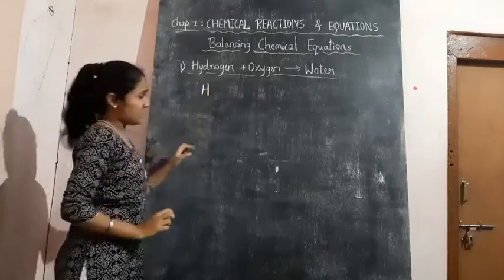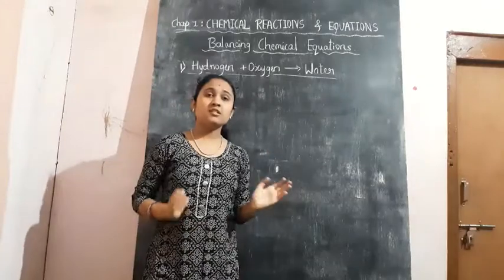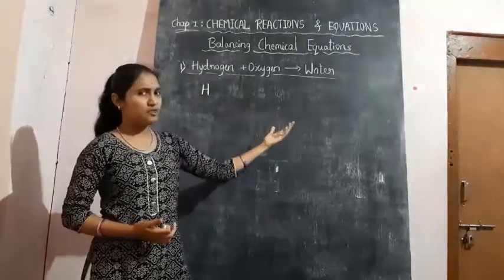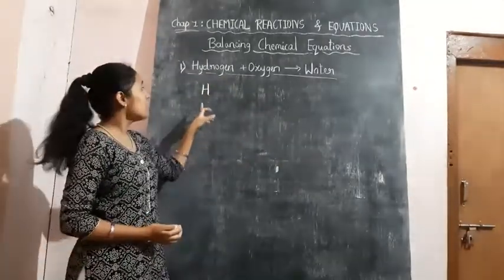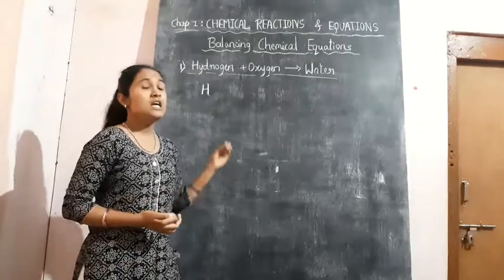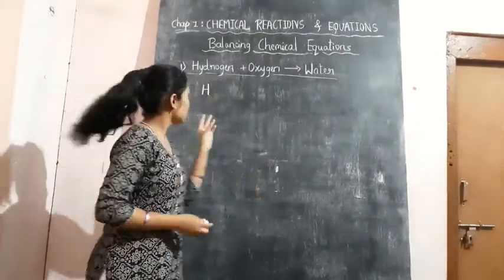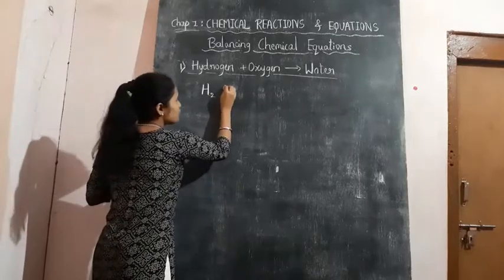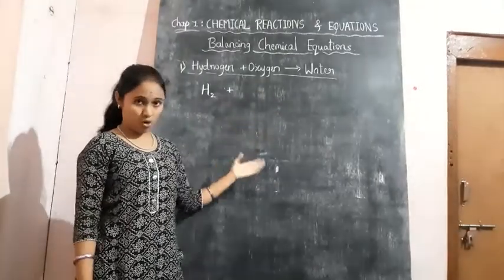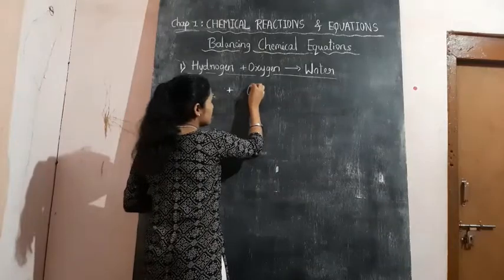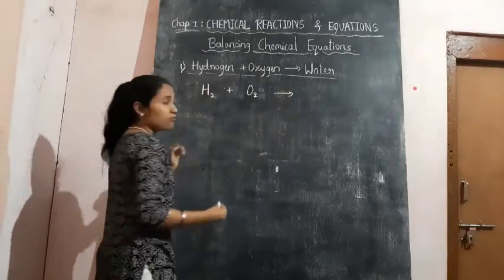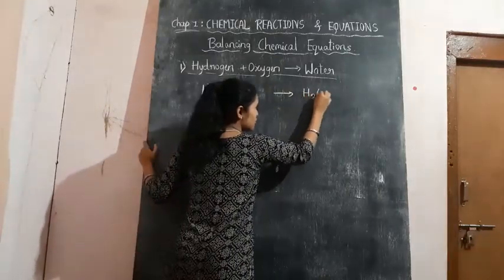The symbol of Hydrogen is H, but when only Hydrogen is given alone (not in a compound), we cannot write just H. Hydrogen is always present in the atmosphere in the form of a diatomic molecule, so we need to write it as H₂. The same applies to Oxygen — it is not available as just O, but is present in our atmosphere as a diatomic molecule O₂. And next we need to write the formula of water, that is H₂O.